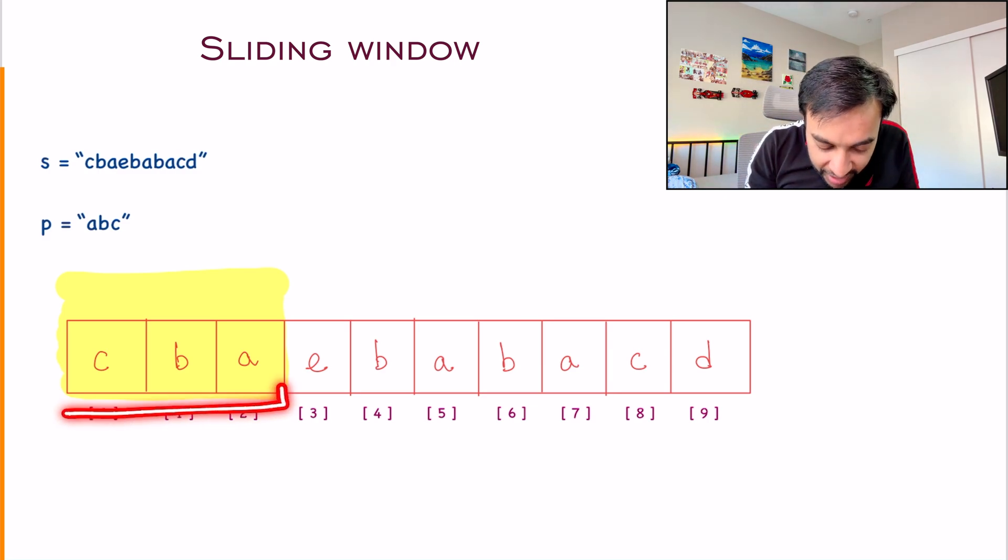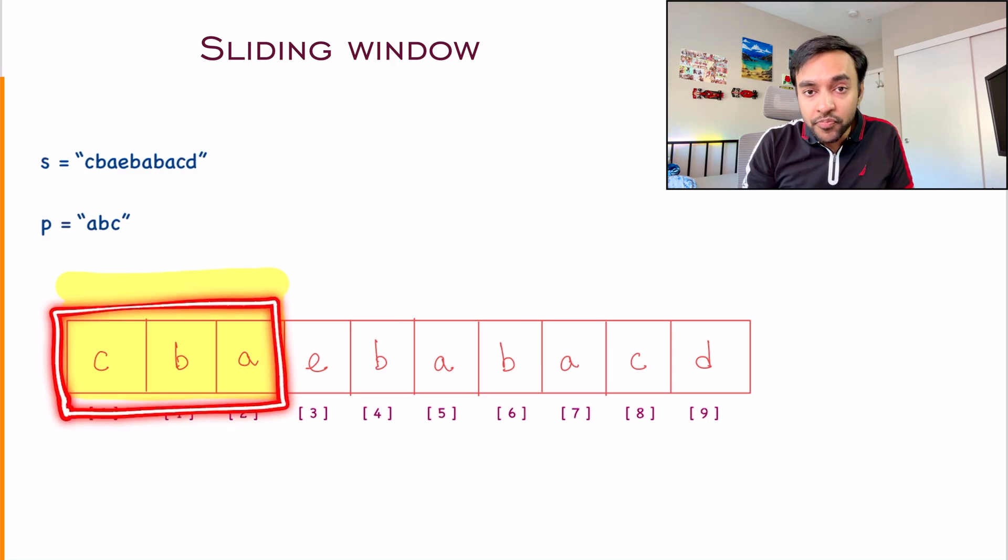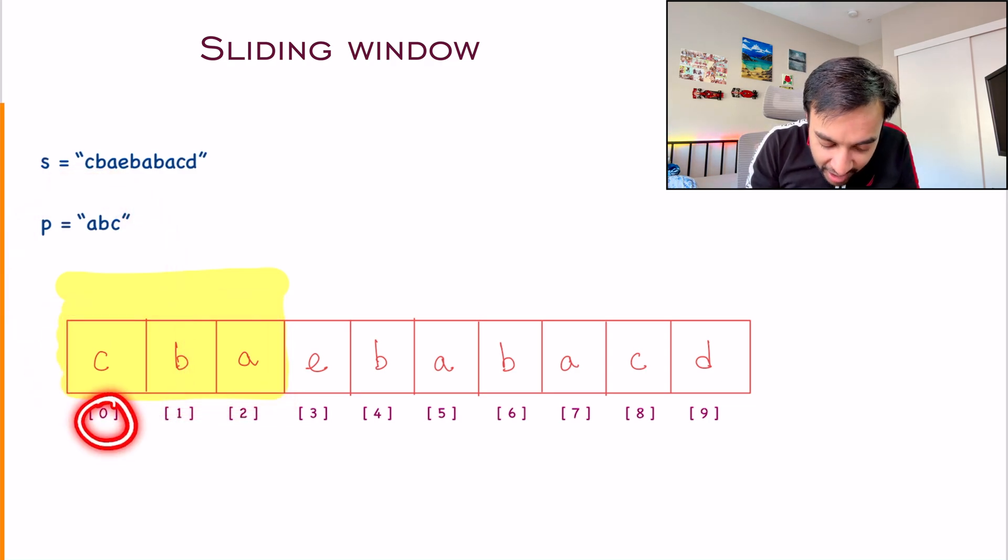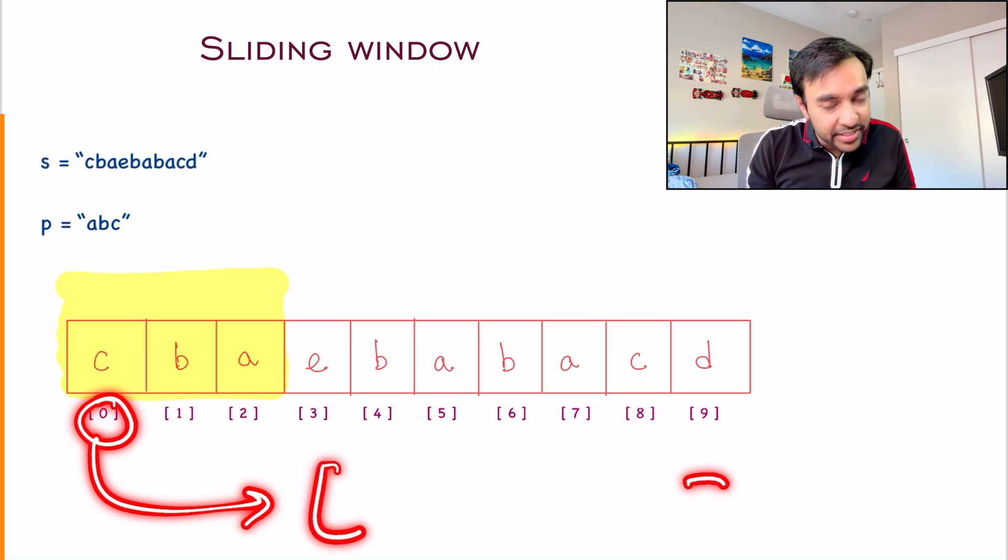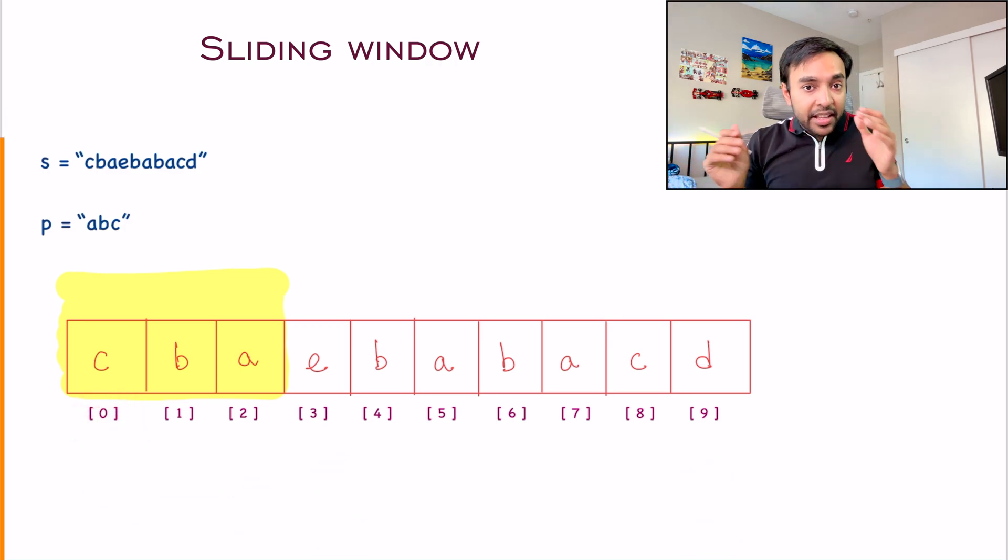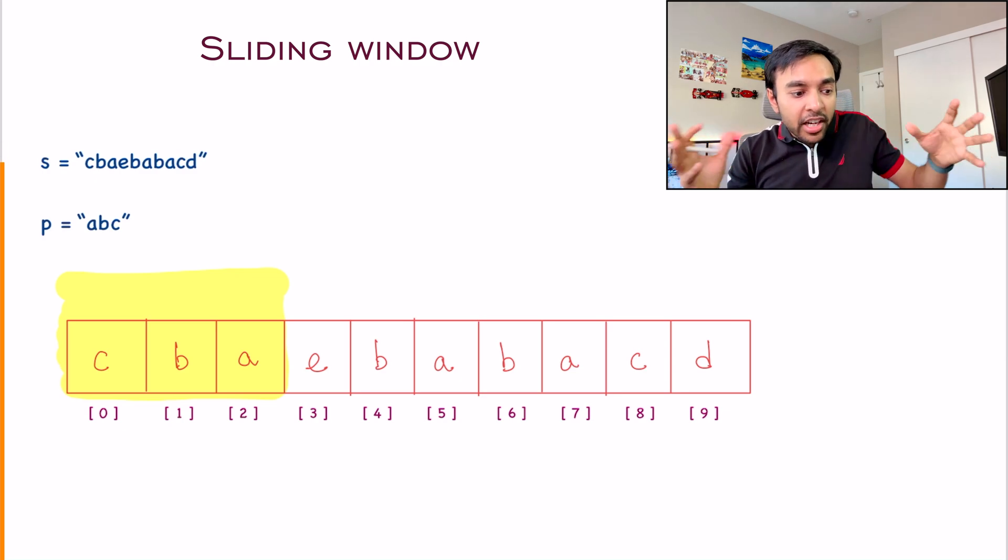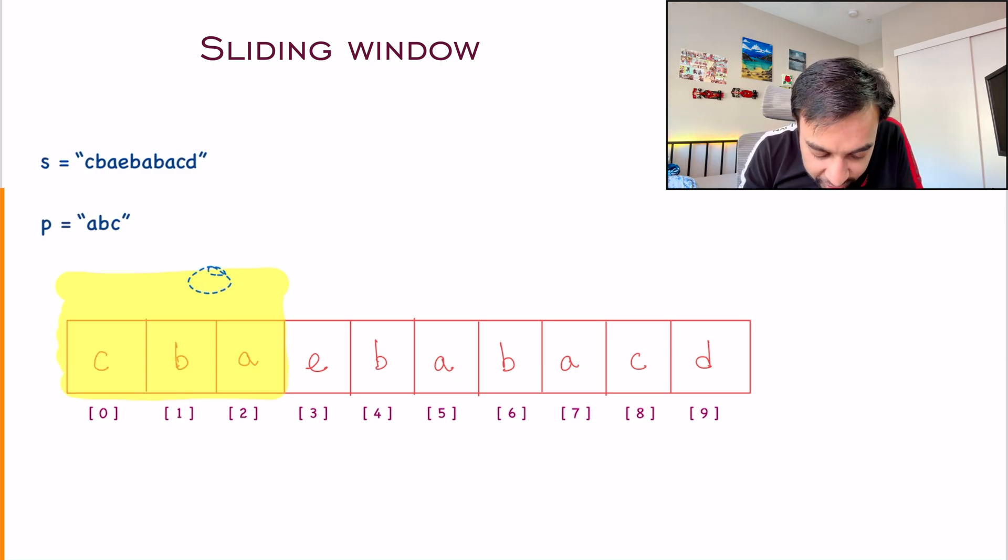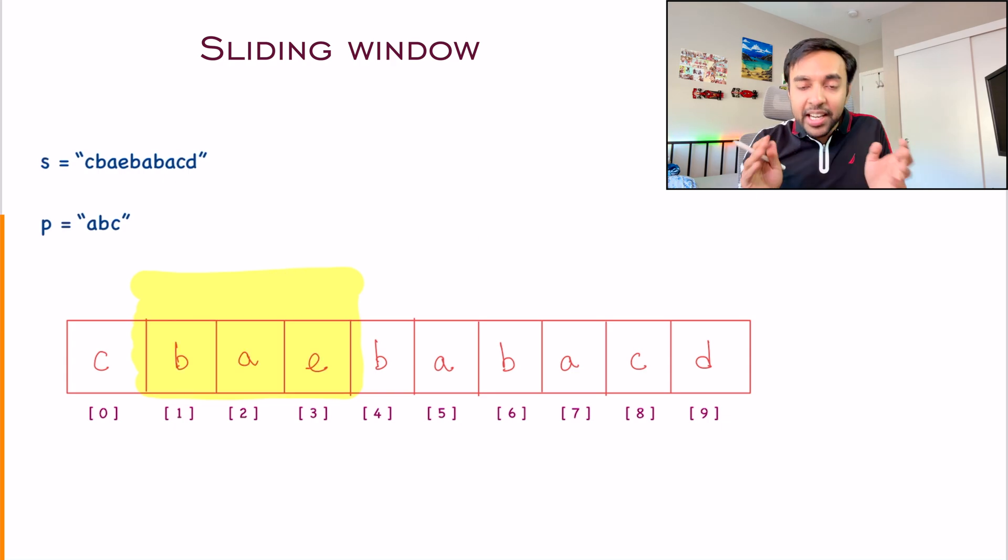So what I'm doing? I am looking at the first three characters right now. If this is an anagram, then what do you do? You add this starting index to your result array, correct? So far, so good. Now what about the next case? In a brute force solution, we were finding the string again. But over here, I have a sliding window. I slide this window over here to my next character.